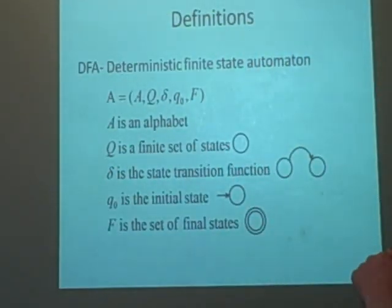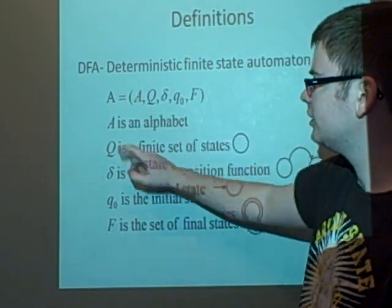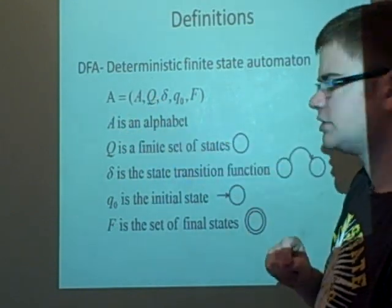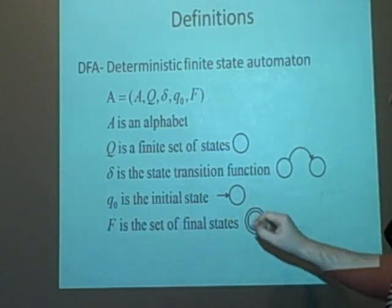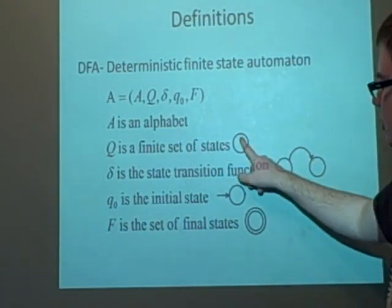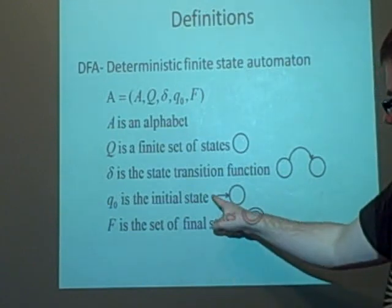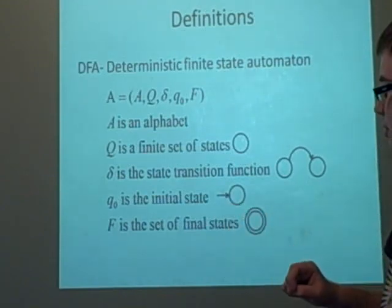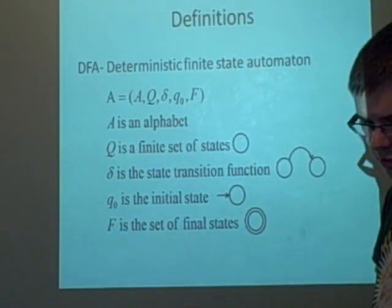Now we're on to DFAs. A DFA is denoted by A = (A, Q, δ, q₀, F), where A is the alphabet, Q is the set of states, δ is the transition function, q₀ is the initial state, and F is the set of final states. States are drawn with circles, and we use arrows for transitions. The initial state is denoted with an arrow going into it, and final states are denoted with a double circle.